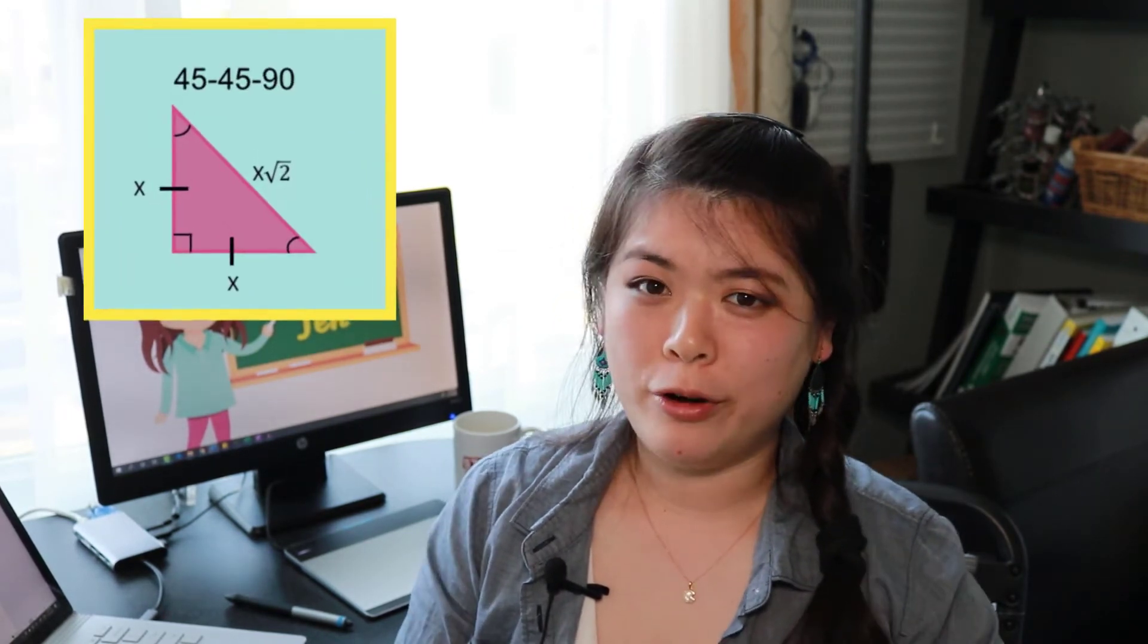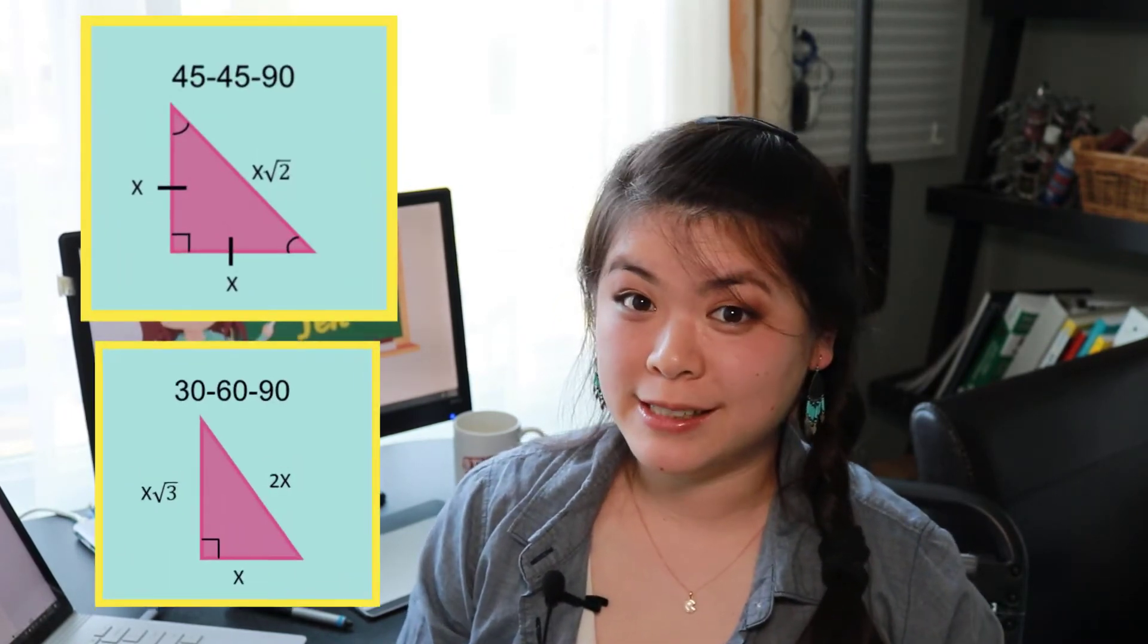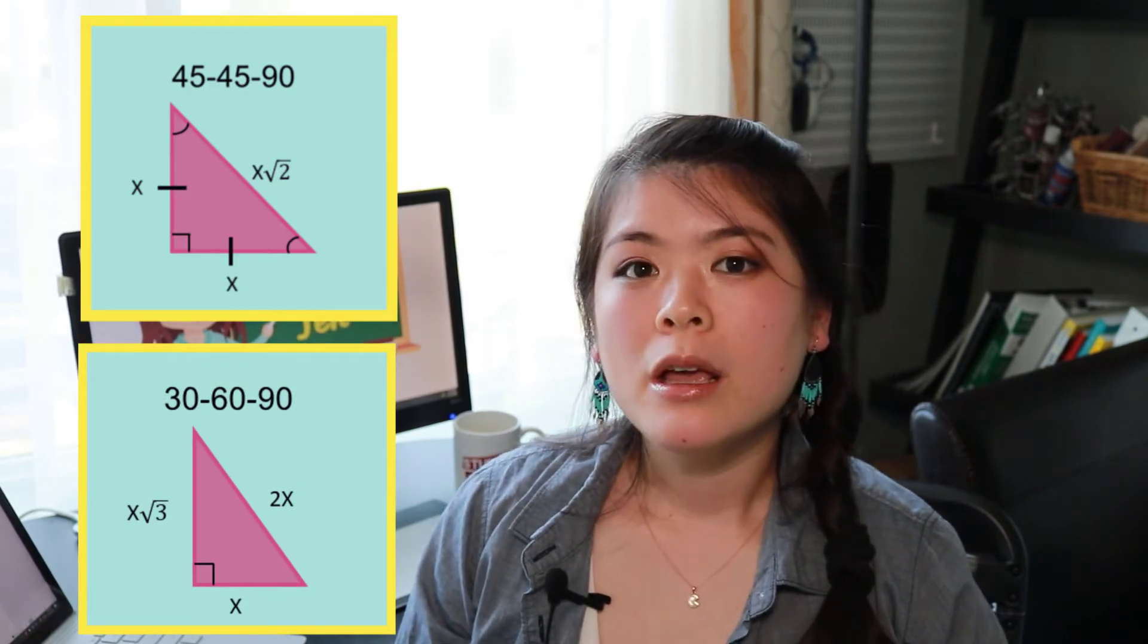So you may already know a couple off the top of your head: 45-45-90 triangle or the 30-60-90 degree triangle. Basically how these work is if you know a triangle has these particular angle measurements then you already know the relationship between their various sides and you can calculate those very easily.